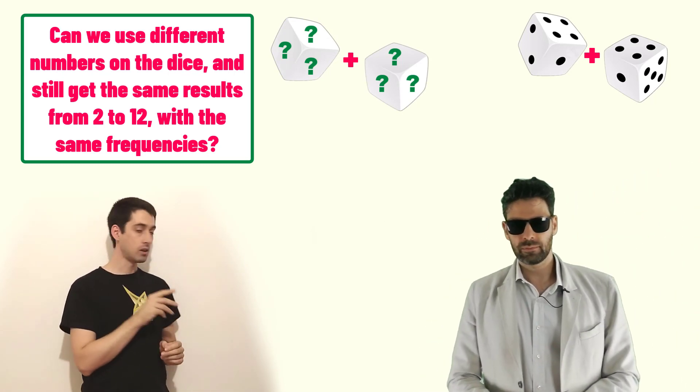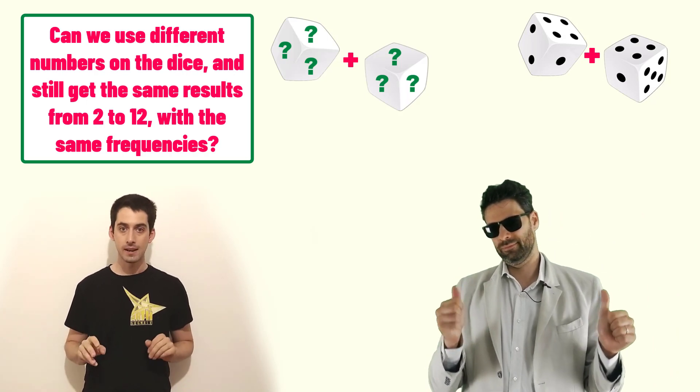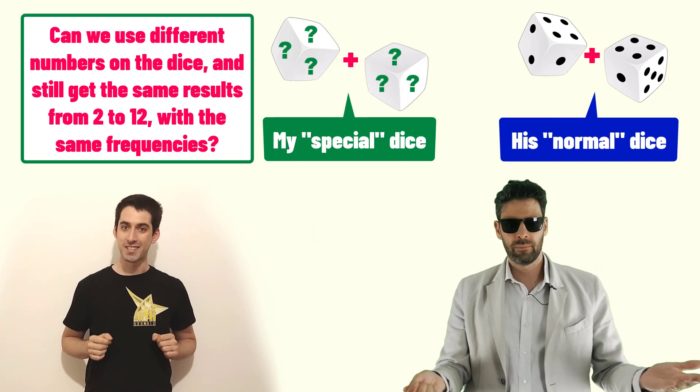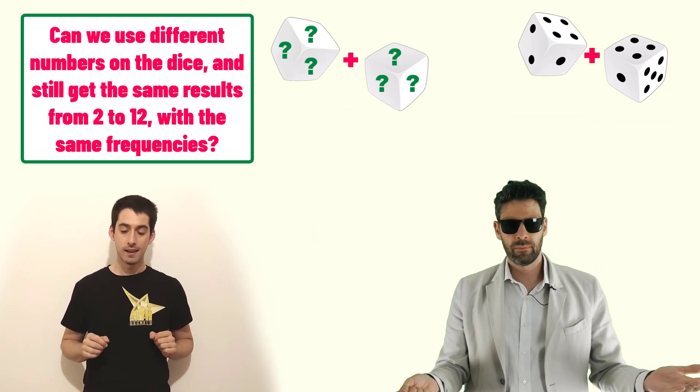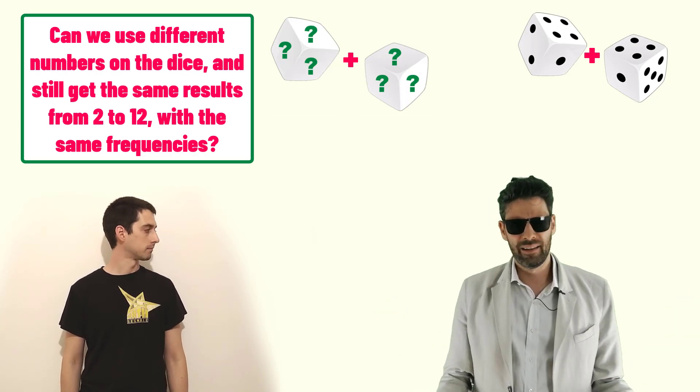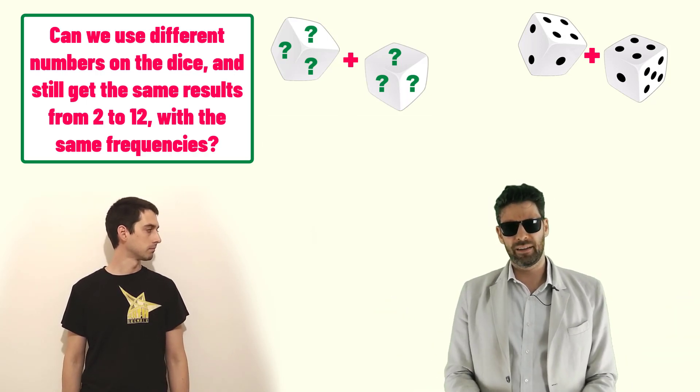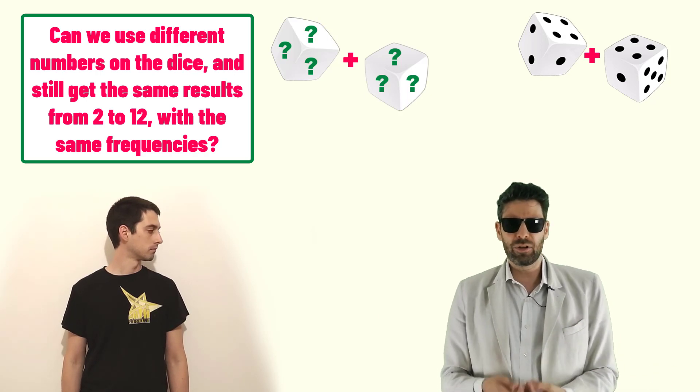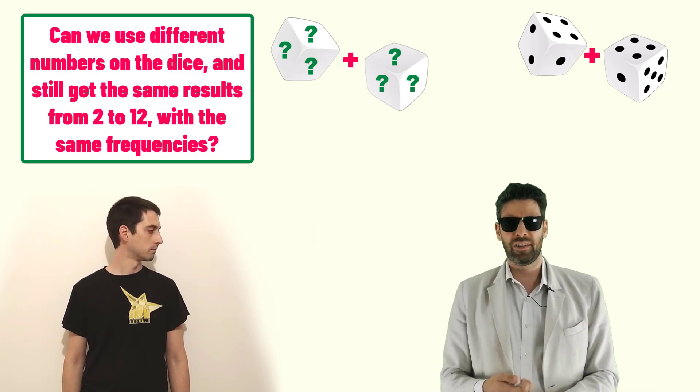You could go to the house of your friend which is a professional Catan player and tell him wait, don't roll them, use my special dice instead. And he will probably reply something like oh come on man, they are completely different. They don't even have the same numbers printed on. How could you think they could generate the same distribution?